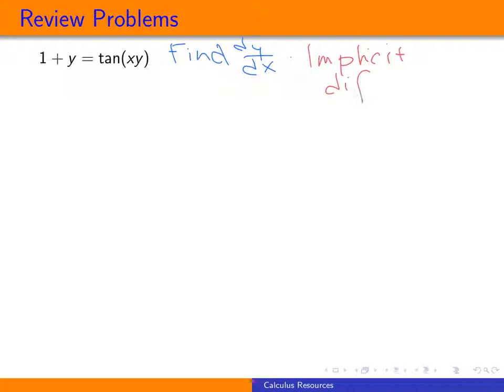For implicit differentiation, what's going on is we're implicitly thinking of y as being some function of x. We just don't know what it is.